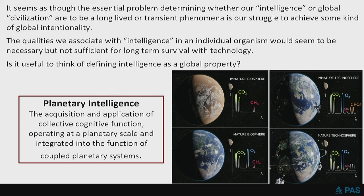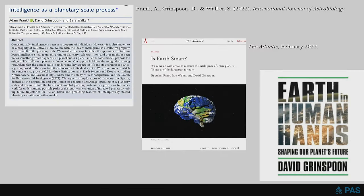We define planetary intelligence as the acquisition and application of collective cognitive function operating at a planetary scale and integrated into the function of coupled planetary systems. I have a paper with two colleagues on intelligence as a planetary scale process, published two years ago in the International Journal of Astrobiology, also a magazine piece in The Atlantic, and I wrote a book called Earth in Human Hands where I propose this view.